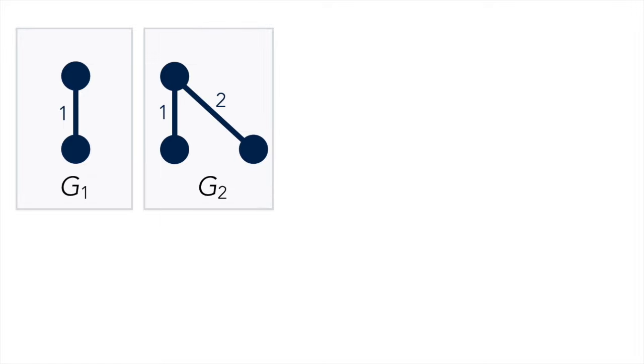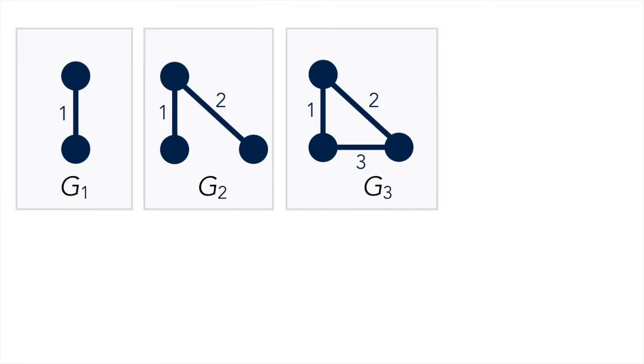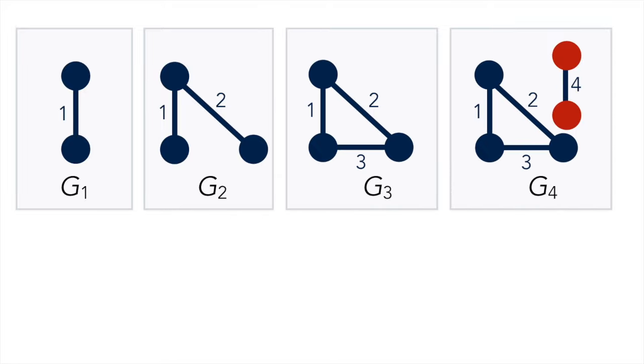At step 3, edge 3 joins with two existing vertices. And in step 4, the new edge introduces two new vertices.